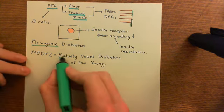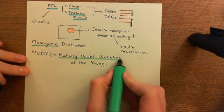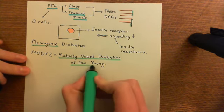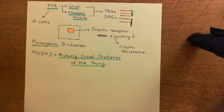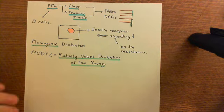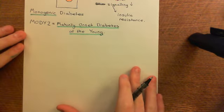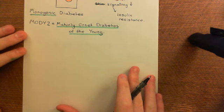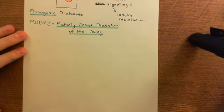We're specifically going to look at MODY 2, which results from a single mutation in one of your genes for glucokinase. To understand what this does, we need to know more about how beta cells respond to blood glucose concentration and release insulin. Knowing this pathway will also help us later when we discuss the sulfonylurea drugs, which are an anti-diabetic medication.